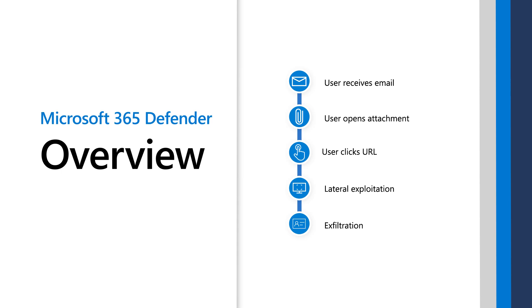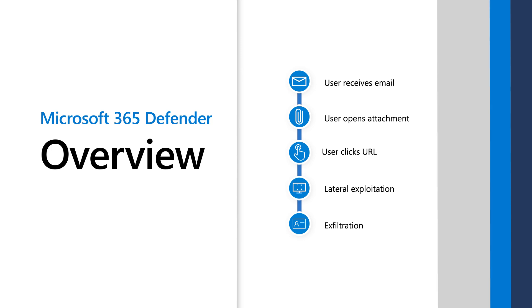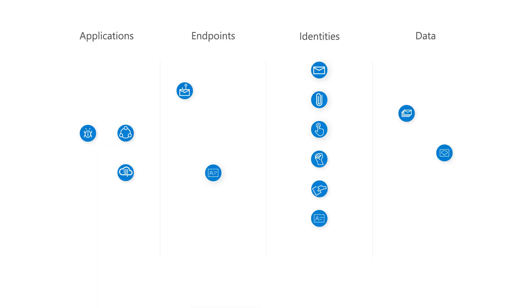Attackers don't respect domain boundaries. They move fast across applications, endpoints, user identities, and data domains. Instead, they establish a foothold, move laterally, and live off the land.